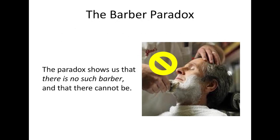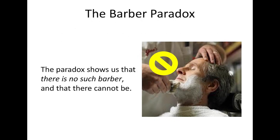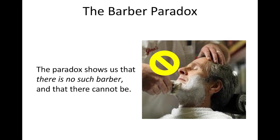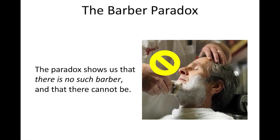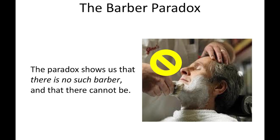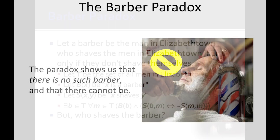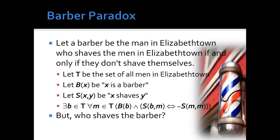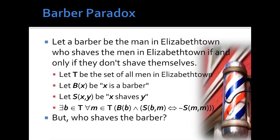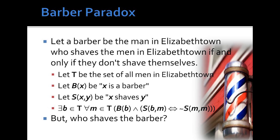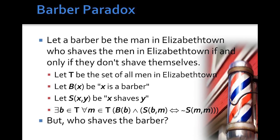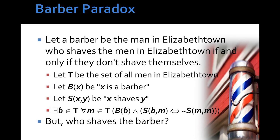In practical terms, it reminds us that rules need boundaries. In mathematics, logic, and even computer science, unbounded self-reference can cause systems to break or loop infinitely. That's why modern set theory and logic systems include strict axioms to avoid such contradictions.